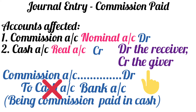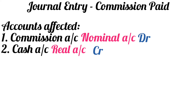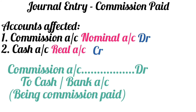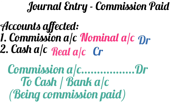Suppose you don't know whether the payment is made by cash or by check, then the journal entry that you should write will be: commission account debit to cash/bank account. And the narration will be: being commission paid.